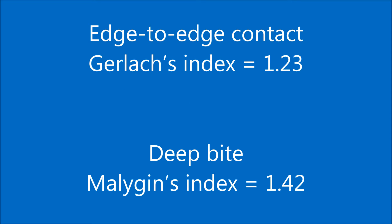Gerlach discovered that the ratio of upper and lower incisors depends on the overbite. Gerlach's index equals 1.23 in edge-to-edge contact. Mulligan's index equals 1.42 in case of deep bite.